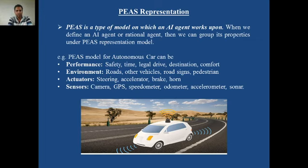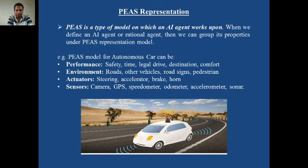What could be the sensors for this autonomous car? Obviously cameras — front cameras, back cameras, and side cameras — are required to check whether other vehicles are ahead or not. GPS is also required to show the car the route and alternative routes to the destination. A speedometer is also required to get input regarding speed. All these are the sensors for this car agent.